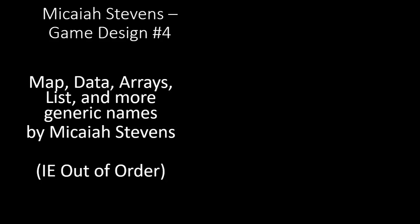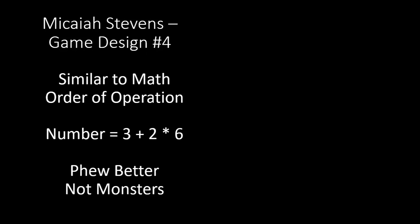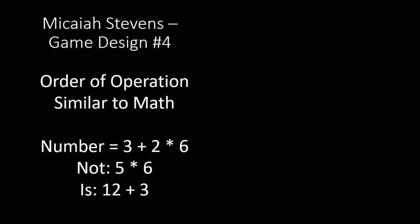Before we get to the real example, it's similar to math and the order of operations. If a number equals three plus two times X — using the star to represent multiplication — then three plus two times six is not fifteen. It's twelve plus three, because two times six equals twelve, and then you add the three. You have to apply that order of operations carefully. That sort of indicates that this node array discussion is about order of operations too. So what is LTRTTB?